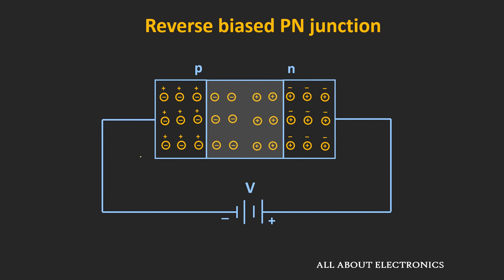In the reverse bias condition, the current we are getting is due to the minority charge carriers. As we increase the applied reverse voltage, the width of the depletion region will increase. And due to that, the immobile ions in this depletion region will also increase. Because of the increase in these immobile ions, the electric field in the depletion region will become stronger, and the minority charge carriers in the vicinity of the depletion region will get accelerated and can move more quickly through it.